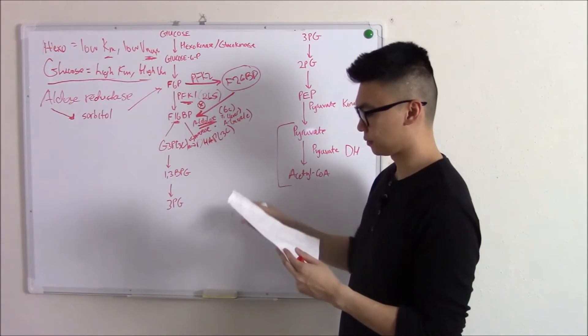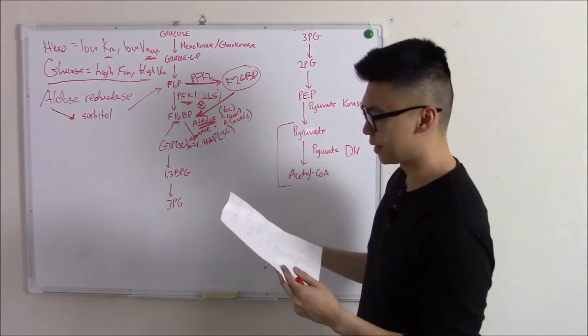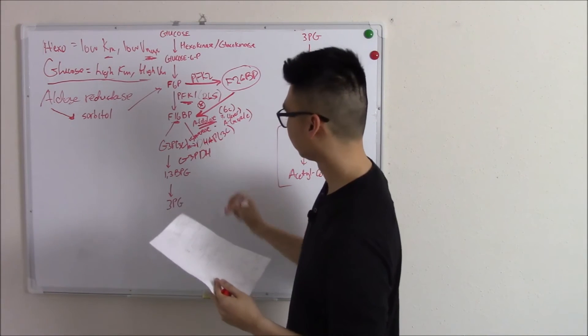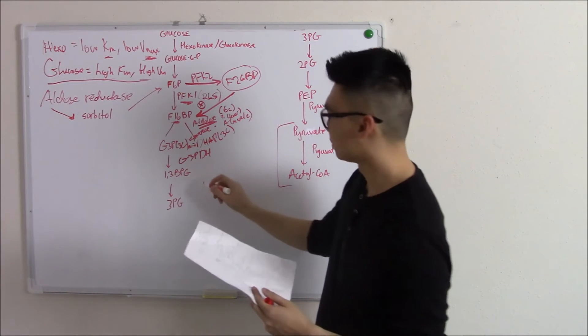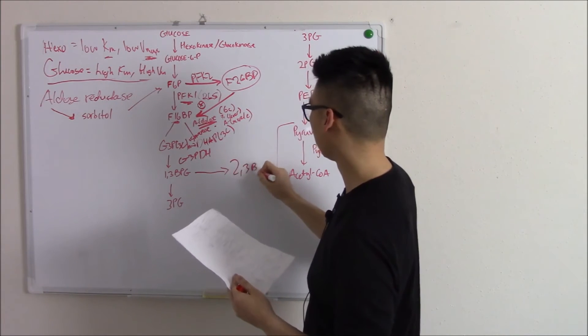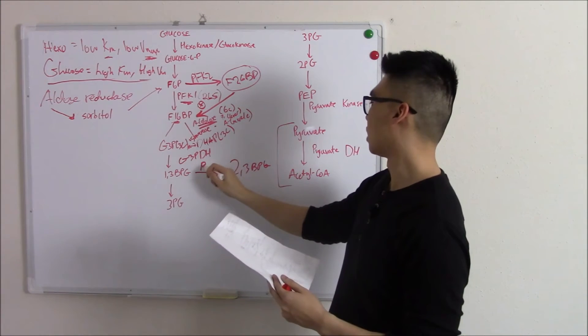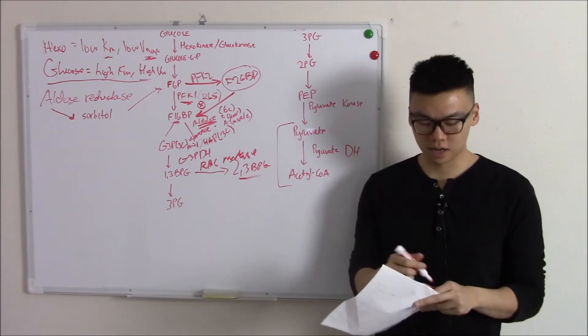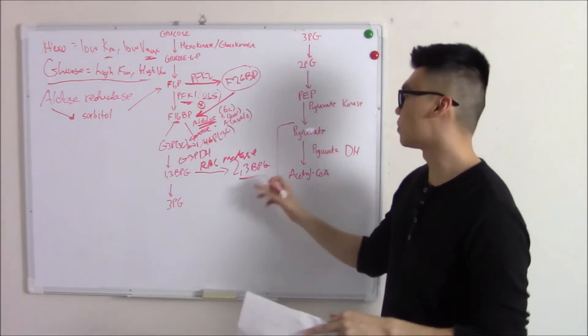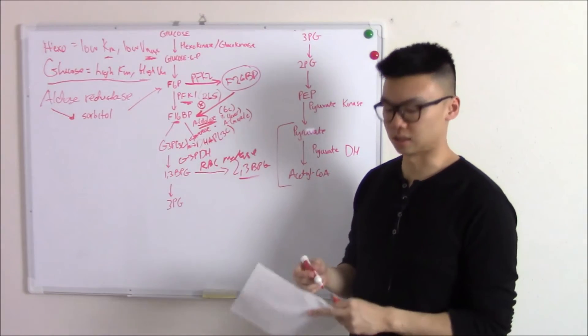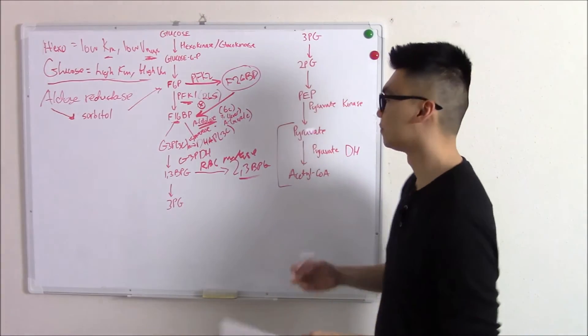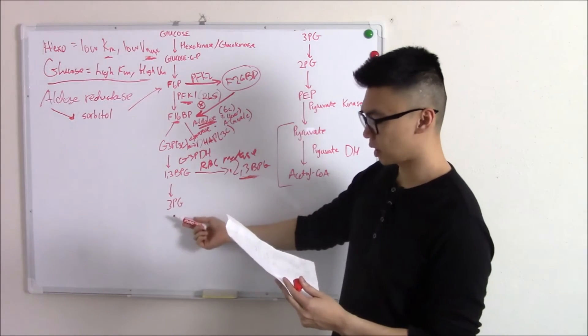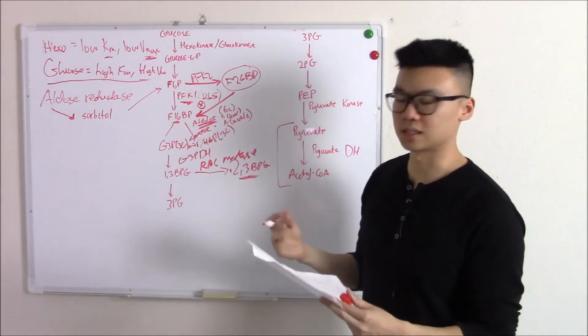Let's move on to the next step. G3P to 1,3-BPG via G3P dehydrogenase. Then 1,3-BPG can become 2,3-BPG via red blood cell mutase. Do you remember 2,3-BPG? You might recall from your respiratory block. 2,3-BPG right shifts that respiratory curve, releases more oxygen. Oxygen for us to use to create ATP. We're not going to get too far into that. That's more for a respiratory block. Just keep that locked in your mind. 1,3-BPG and 2,3-BPG. Not much important enzymes going on there.